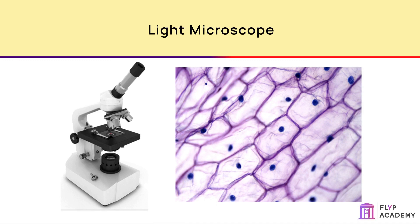Light microscopes can be used to view any type of sample, including living things. Light microscopes can magnify an object by up to 1,500 times. This is relatively low magnification and the resolution of the image is approximately 200 nanometres, which is 2 × 10⁻⁷ metres. The resolution is the distance two points would need to be apart in order to be seen as two distinct points.